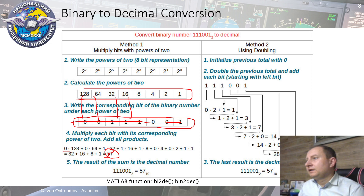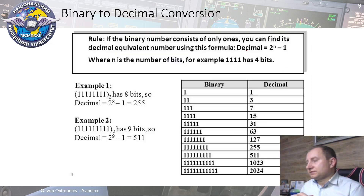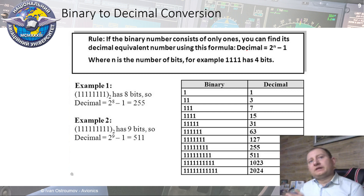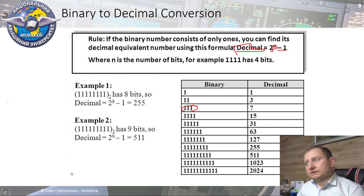There are many other approaches to transform in both directions — more than four methods. If you would like, you can search online and find other algorithms. Also a quite commonly used shortcut: if we have only ones in our binary data, we can easily transform it to decimal by the formula: decimal number equals two to the power of the number of ones, minus one. So if you have three ones, the decimal number is two to the power three minus one, which is eight minus one, which is seven.